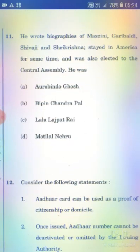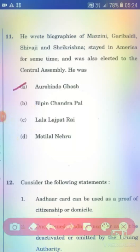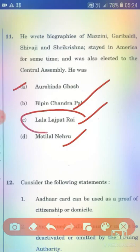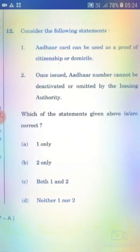He wrote biographies of Mazzini, Garibaldi, Shivaji, and Sri Krishna. He stayed in America for some time and was also elected to the Central Assembly. The right answer is Option C — Lala Lajpat Rai.